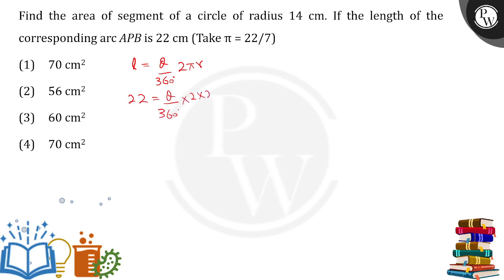Putting in the values: 22 equals theta by 360 degrees into 2 into 22 by 7, and the value of r given is 14. Doing the calculation: the 2s cancel, 360 reduces to 180 and further cancels to 90, and the 22s cancel out. So theta comes out equal to 90 degrees.